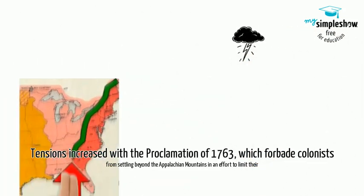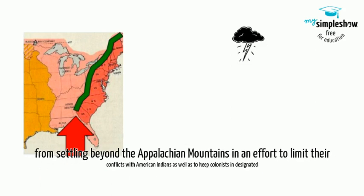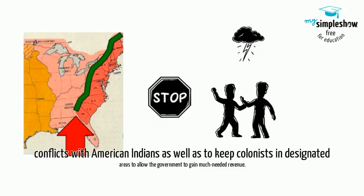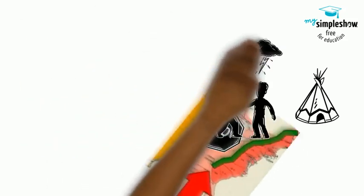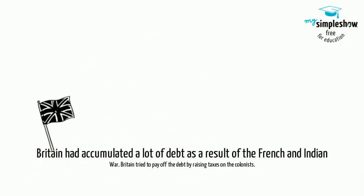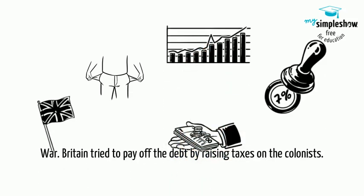Tensions increased with the Proclamation of 1763, which forbid colonists from settling beyond the Appalachian Mountains in an effort to limit their conflicts with Native Americans, as well as to keep colonists in designated areas to allow the government to gain much needed revenue. Britain had accumulated a lot of debt as a result of the French and Indian War and tried to pay off that debt by raising taxes on the colonists.